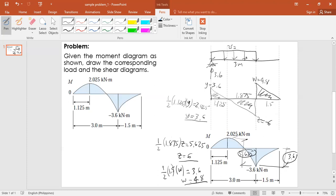We can solve for w. That's 3.6 times 2 divided by 1.5, which is 4.8. So 4.8 is w, this 4.8. After this, we can draw the load diagram.